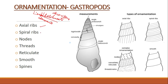So these ornamentations are: axial ribs, spiral ribs, nodes, threads, reticulate, smooth, and spines. When we talk about axial ribs — ribs are nothing but ridges or lines that divide something into parts.